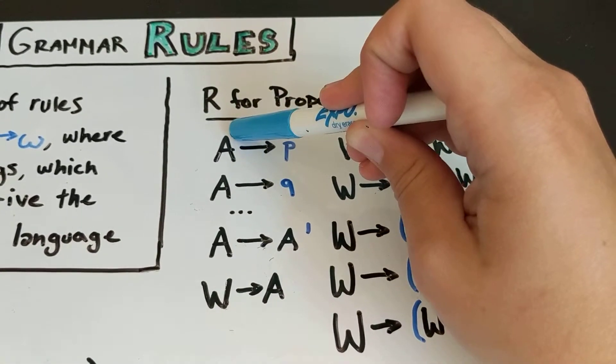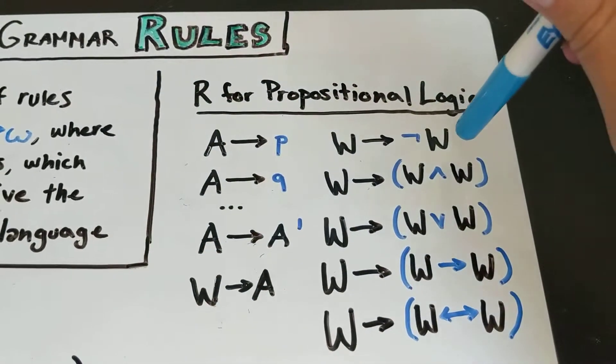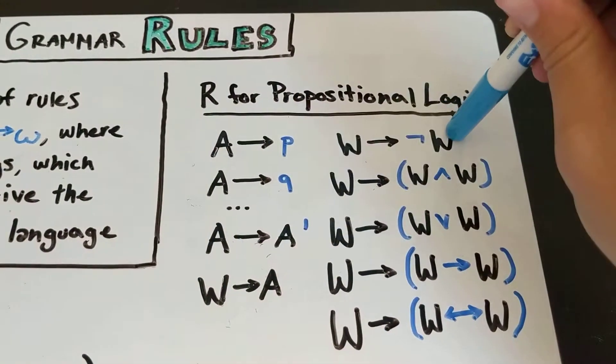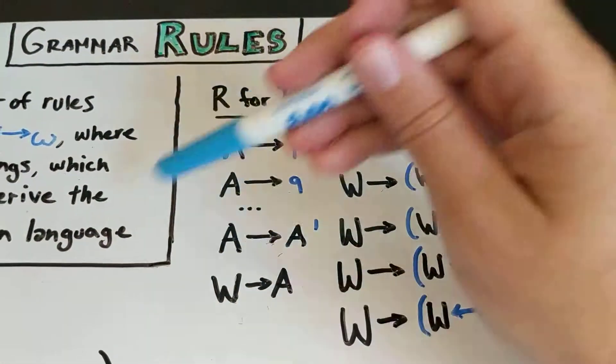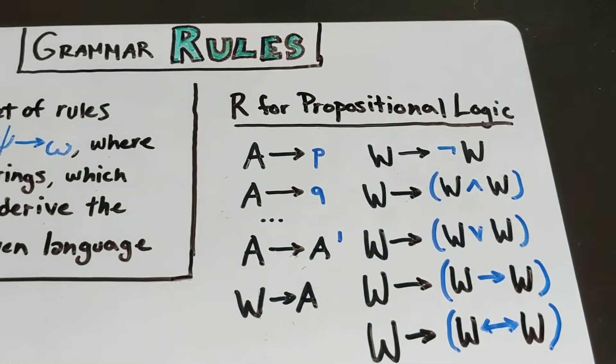If we have something that is a W, we know that not W is also a W. So this is just a method that we can use to form well-formed formulas.